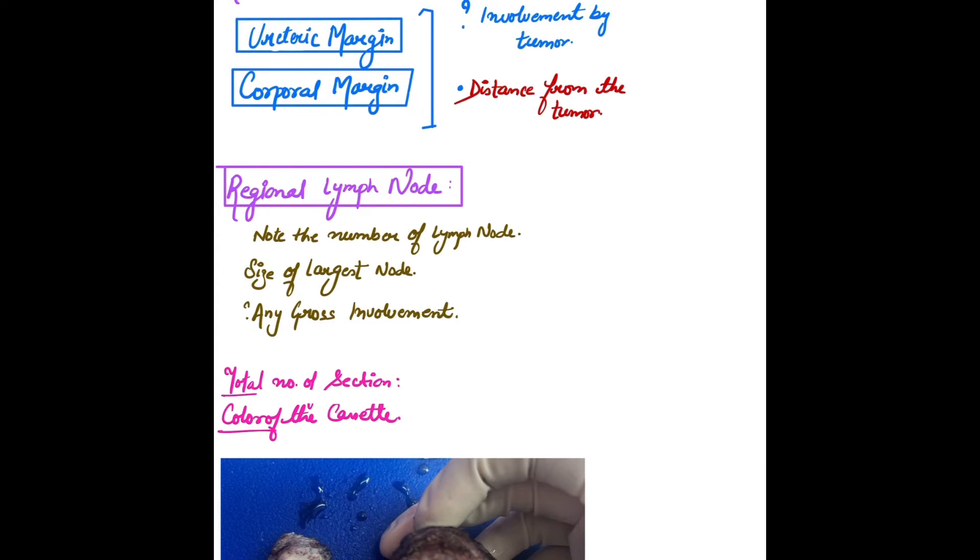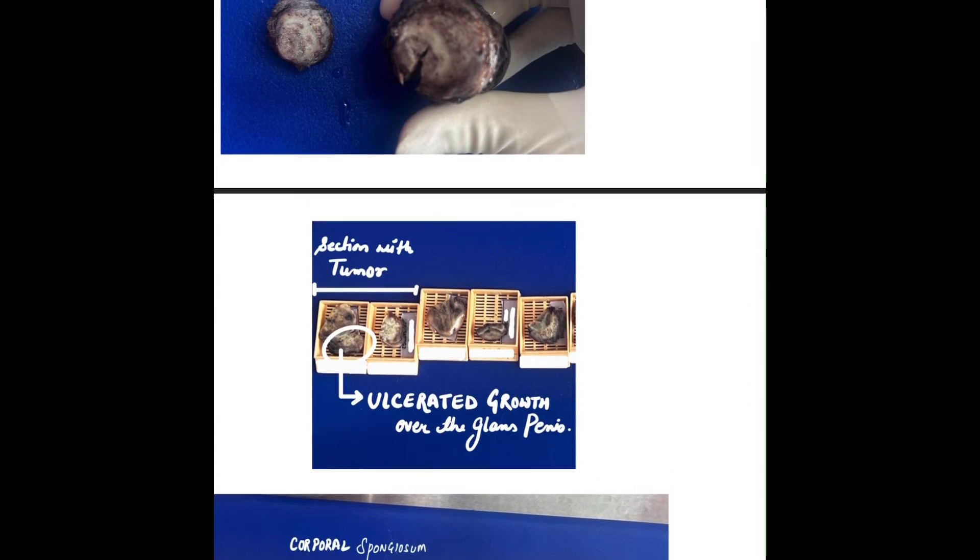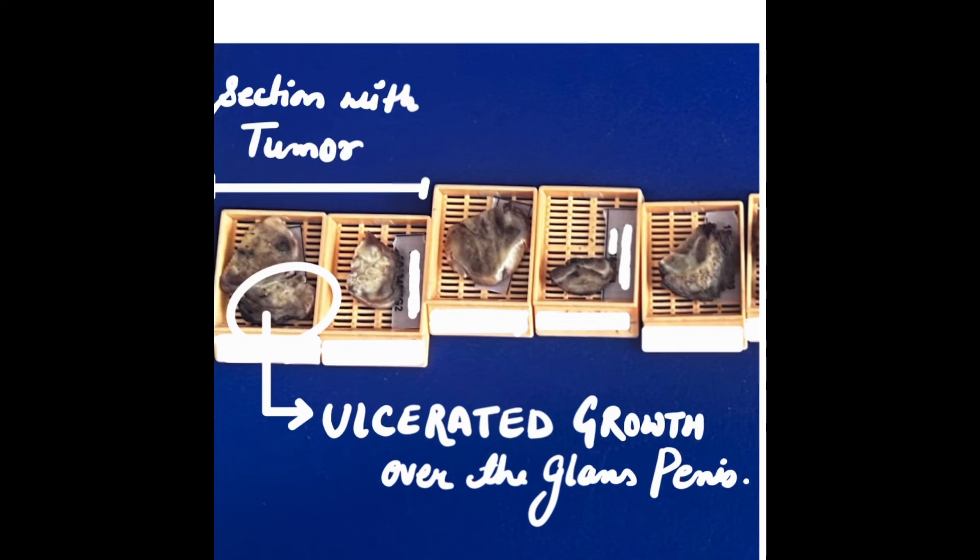This was our case of partial penectomy. This is the urethral meatus—here I have kept a probe inside it to orient the specimen. In this section, you can see the probe placement and specimen orientation.